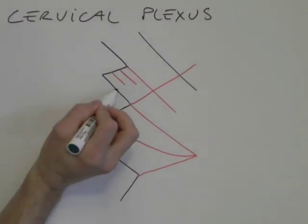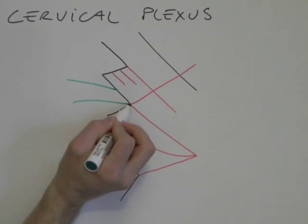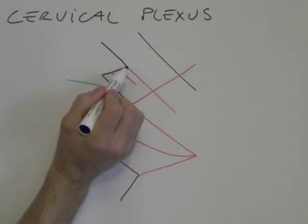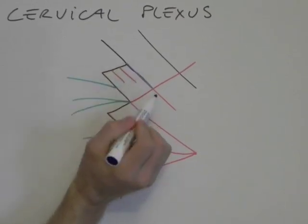So we have one branch coming out from here, two from here, and one from here. Now, before adding the labels, we can underline the ansa cervicalis. That is this one.